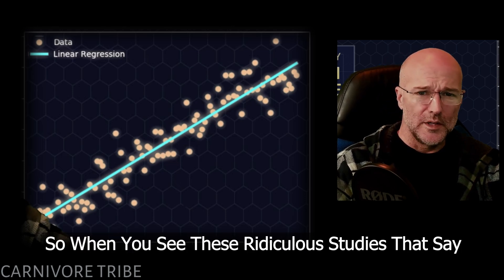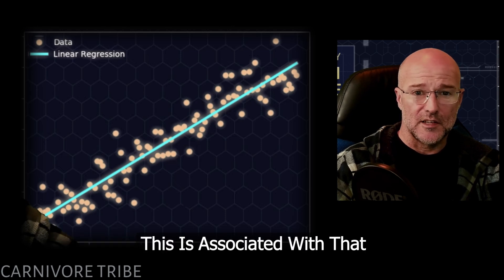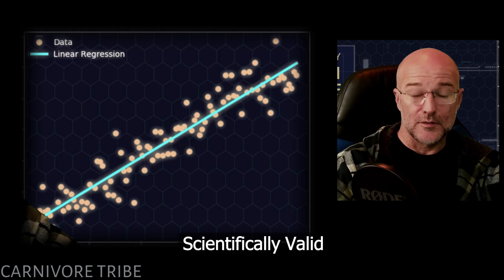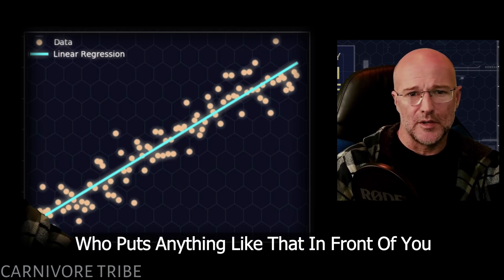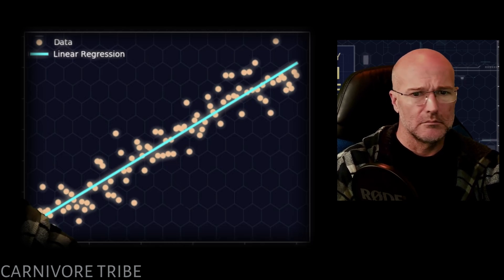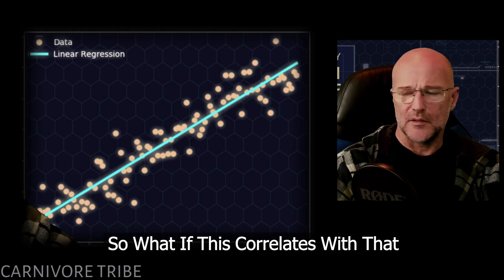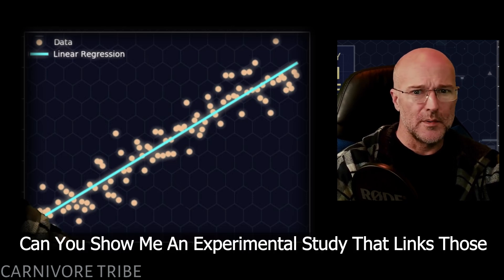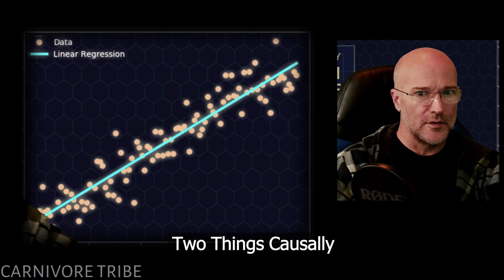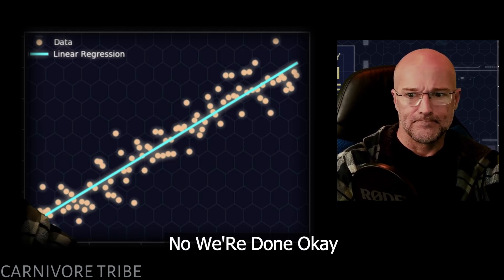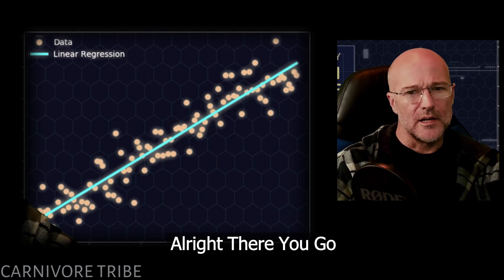So when you see these studies that say this is associated with that, the correct, scientifically valid, robust response is: so what? So what if this correlates with that? Does this cause that? Can you show me an experimental study that links those two things causally? No? We're done. Okay, what's next?